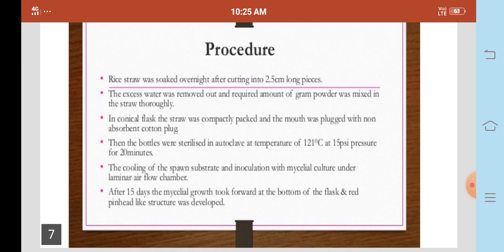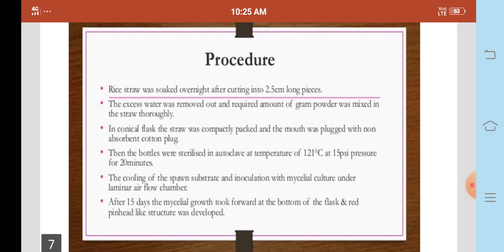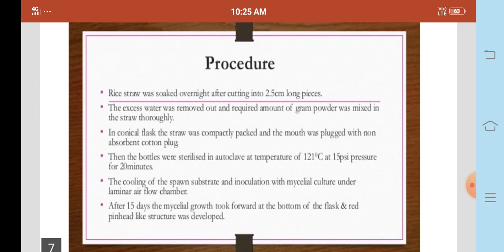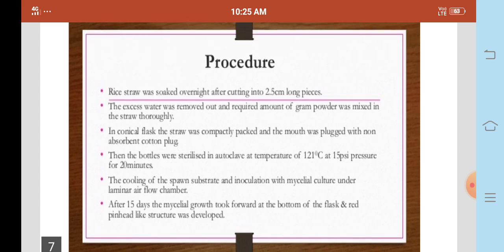The straw was compactly packed in conical flasks and the mouth was plugged with non-absorbent cotton plug. Then the bottles were sterilized in autoclave at 15 PSI pressure for 20 minutes. The cooling of the spawn substrate and inoculation with mycelium culture under laminar air flow. After 15 days the mycelium growth took place at the bottom of the flask and red pinhead-like structures developed.